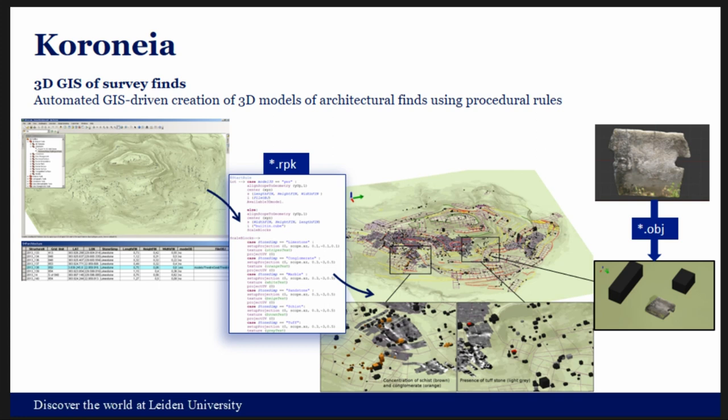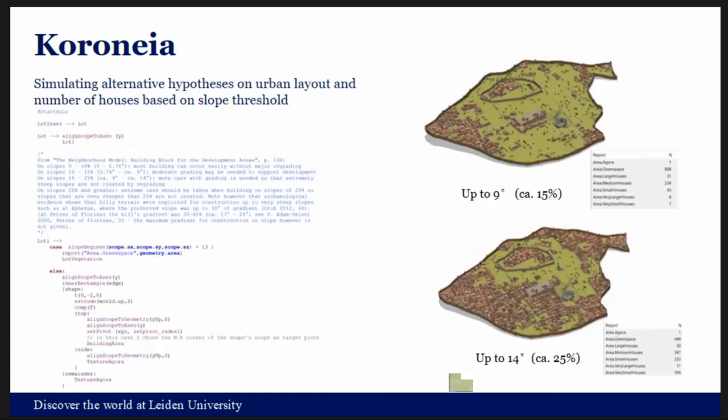At the same time, I created some manually modeled 3D models of special finds — for example, what we think is a theater seat, though we're still not sure about that. The rule automatically places this 3D model on top of the location and substitutes the GPS points with it.